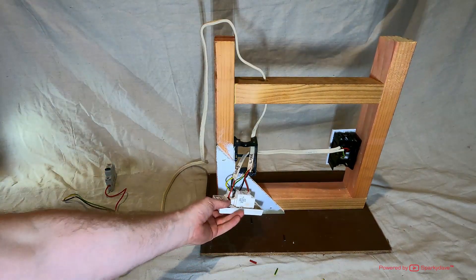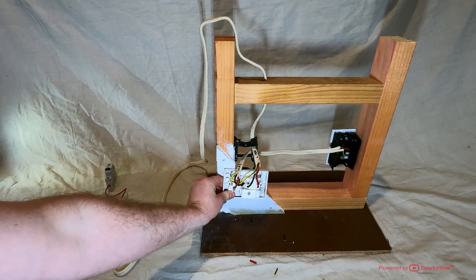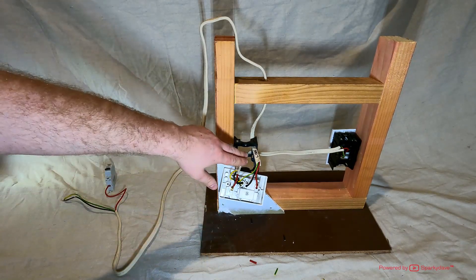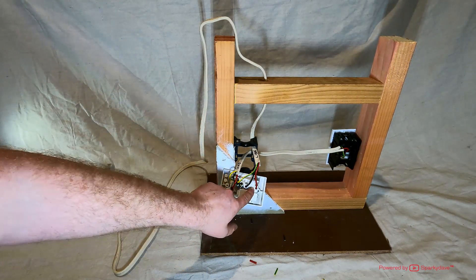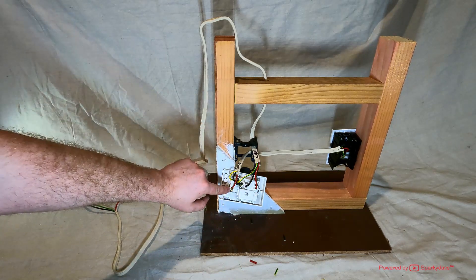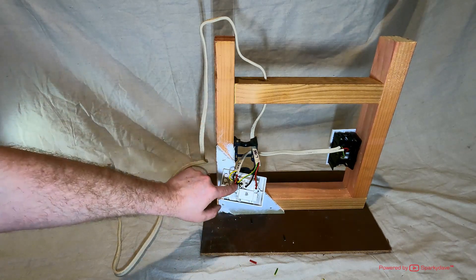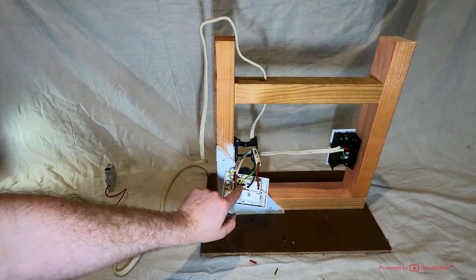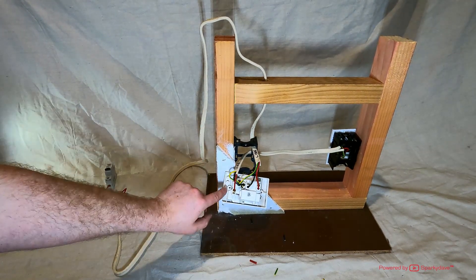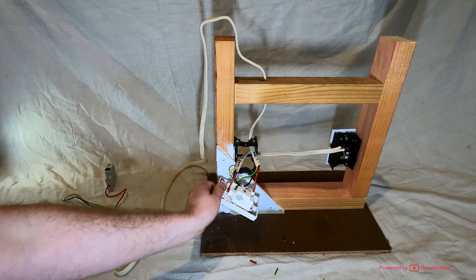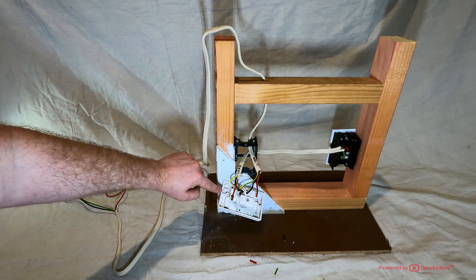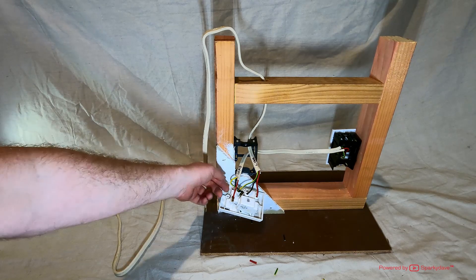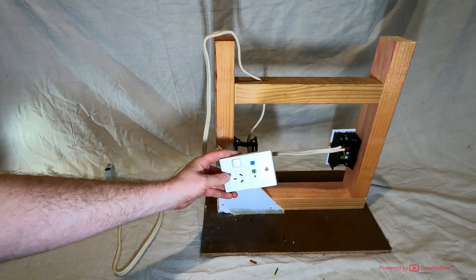Now this one's screwed in, you can see the line connection goes into the top two, the load connection goes into the bottom two, and both earths are together, which you can sort of see into the earth contact pin there. Now this one's ready to screw back to the wall. There's a couple of screw caps on the back of the fitting here you can just pop off and use to cover up the screw terminals on the face of it.